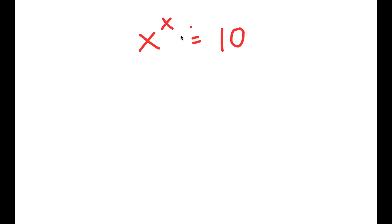If we just try to plug in a random number, let's say 2, I get 2 to the power of 2, which is equal to 4, which is much less than 10. So now let's try 3. 3 to the power of 3 is 27. So it's really hard to actually solve this.